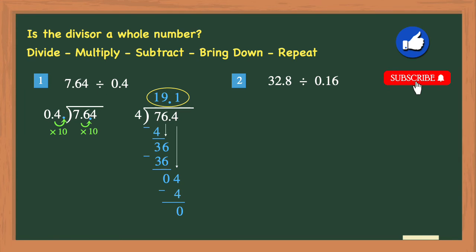Now let's take a look at this second division problem of 32.8 divided by 0.16. You'll start again by rewriting the division problem using the long division box. 32.8 is the dividend, so it goes inside the box. 0.16 is the divisor, and it goes outside the box. Now you need to ask yourself that question: is the divisor a whole number? Again, it is not, so you will need to convert it into a whole number before you can begin dividing.